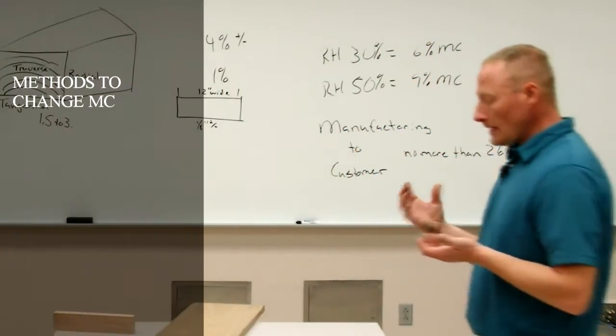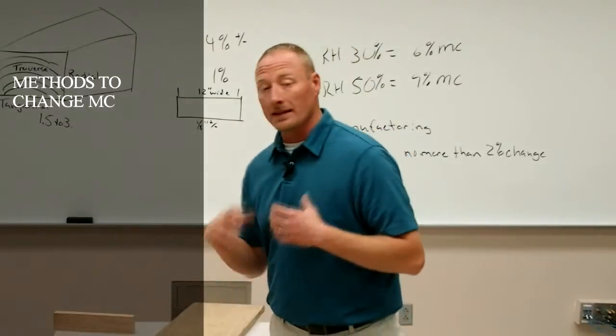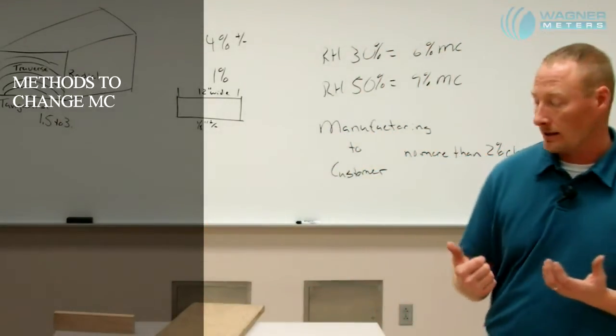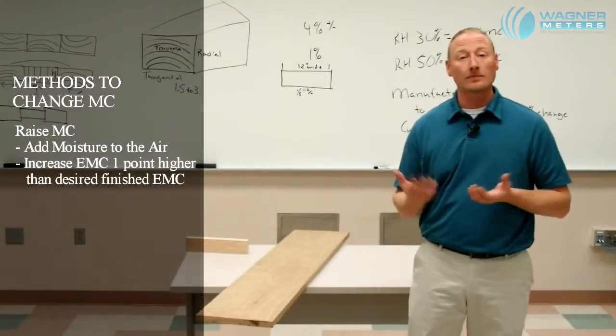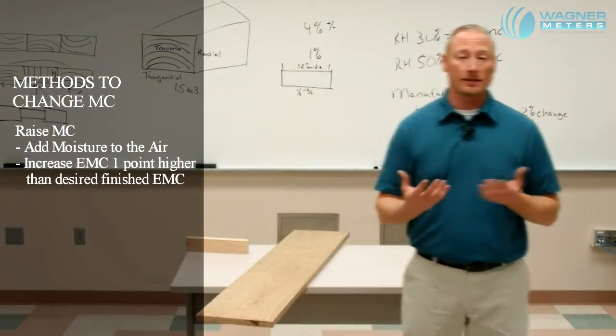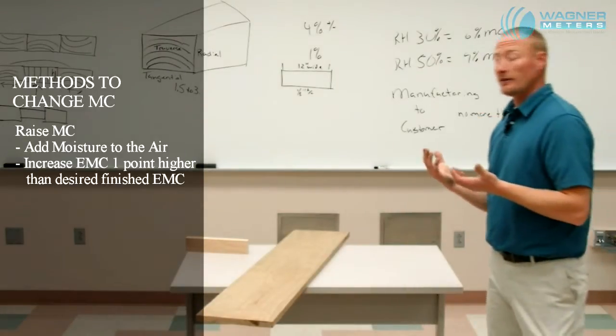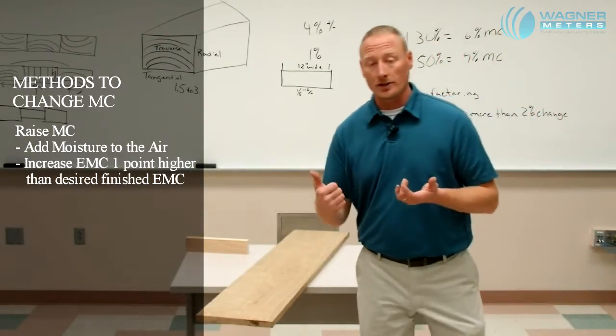Well, let's say we have a board that is lower in moisture content and we want to increase that moisture content. We need to put it in an environment that is moisture and air. So adding a humidification system or adding moisture to that air or raising that relative humidity is going to increase that moisture content.